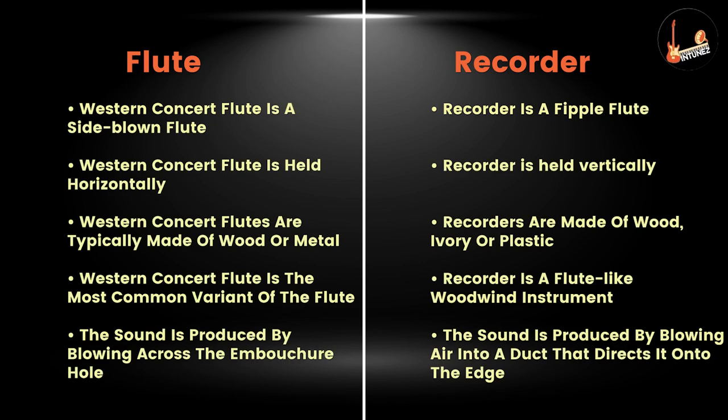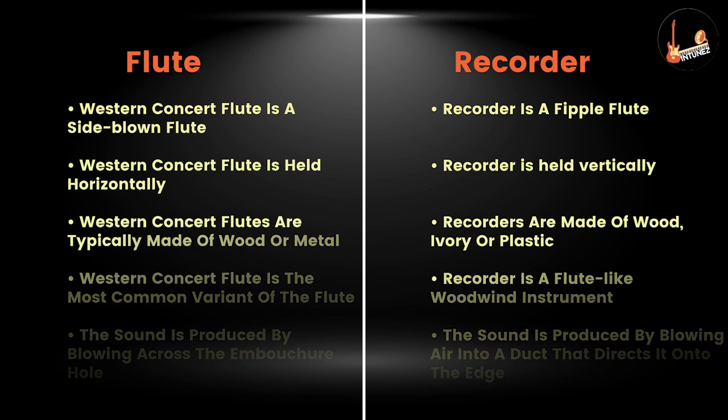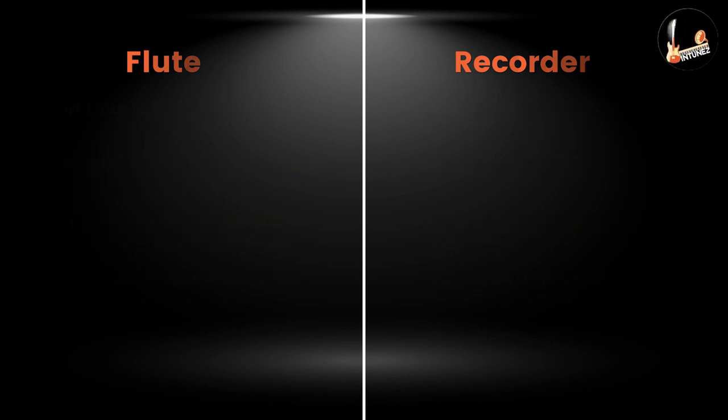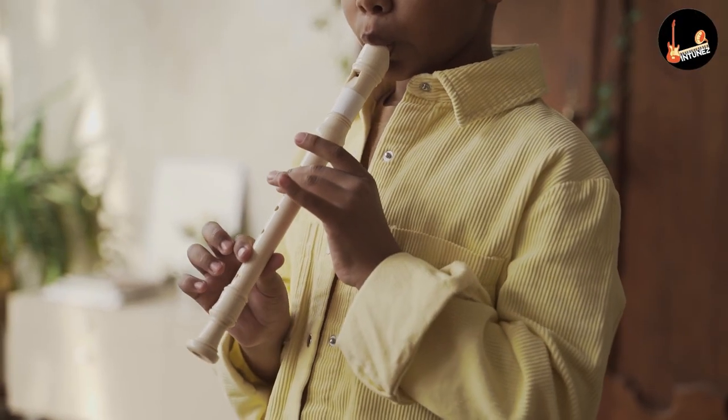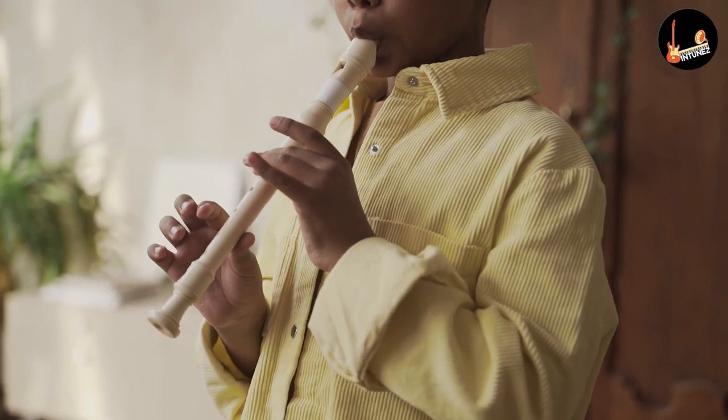As we blow on the recorder, with the aid of the fipple, the air that enters the inner tube is directed onto the edge of the windway duct, which prompts the vibration of air particles inside the canal. Recorders, for this reason, are named duct flutes or fipple flutes.